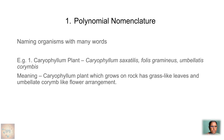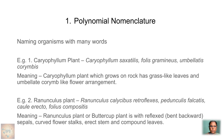In the polynomial name of Caryophyllum, 'saxatilis' means dwelling among rocks, 'foliis gramineis' means grass-like leaves, and 'umbellate corymb' means umbellate corymb arrangement of flowers. Another example is Ranunculus: Ranunculus calycibus retroflexis, pedunculis falcatis, caule erecto, foliis compositis. This means the buttercup plant has reflexed sepals, curved flower stalks, an erect stem, and compound leaves.